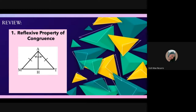When we say reflexive, it reflects — whatever is on the left is also on the right, or they are the same. For example, one on the left, one on the right. We have triangle MAH and triangle TAH. Can you give the reflexive property of congruence for these triangles?